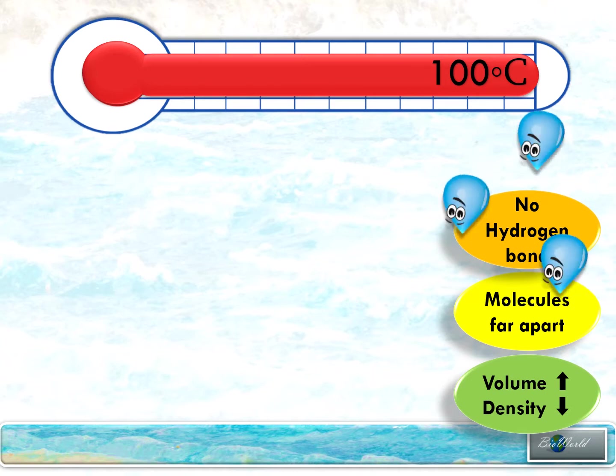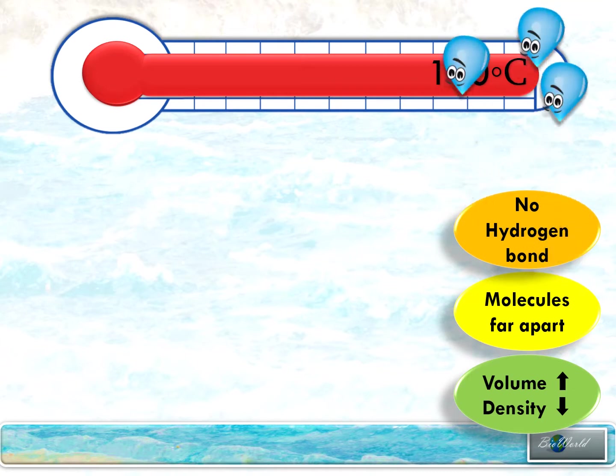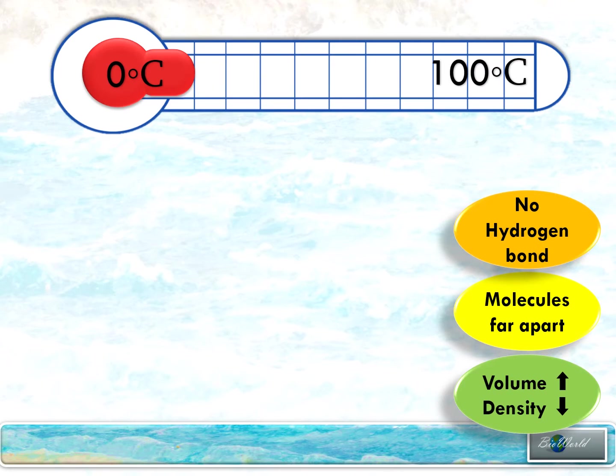Now when volume is high, density will become less. That means the water vapor will start to become lighter and float upwards. Now let's compare the other end of the thermometer at zero degrees Celsius.